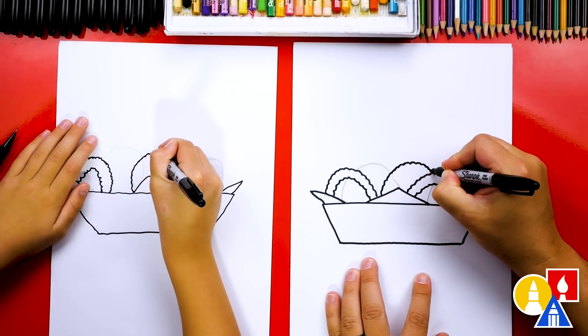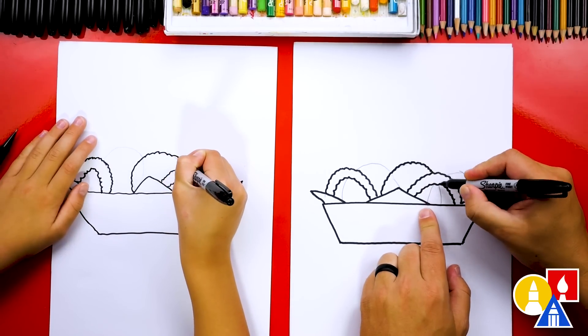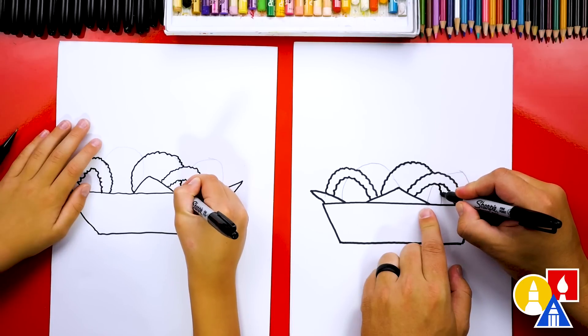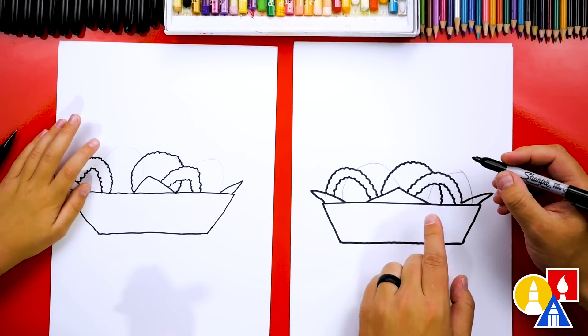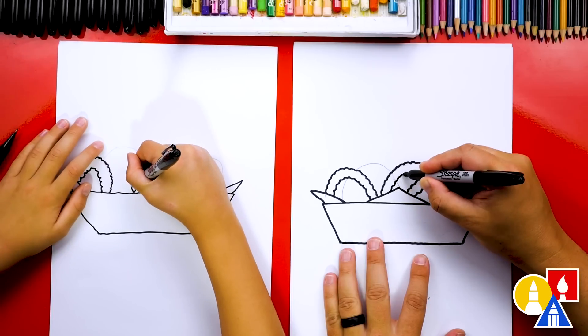And then when we get to the onion ring right here, we're going to imagine it going behind. That's why we erased that pencil line that was inside of there. And then we're going to come down here and keep drawing the onion ring. Now let's come back and we'll draw the inside bumpy line.